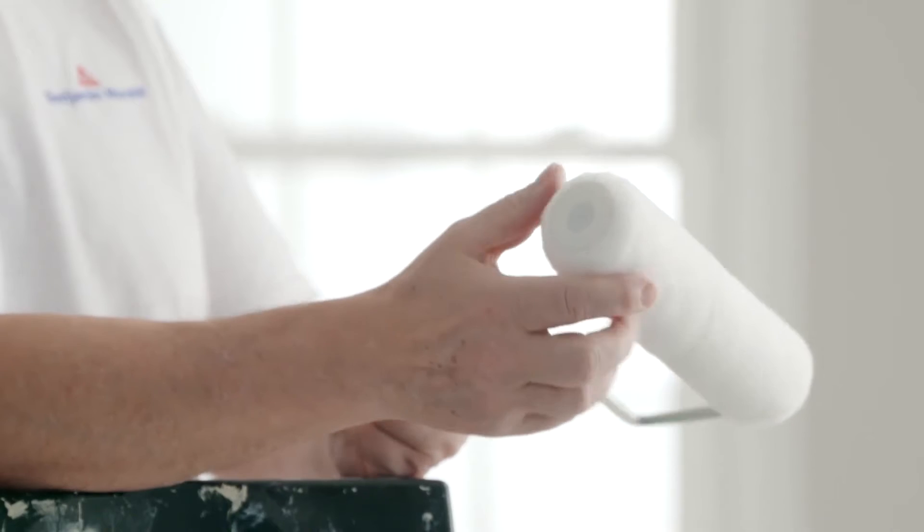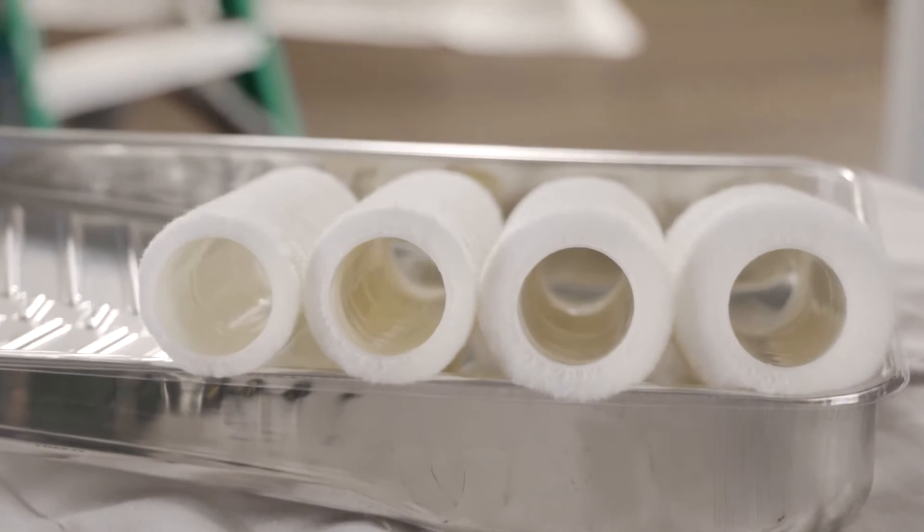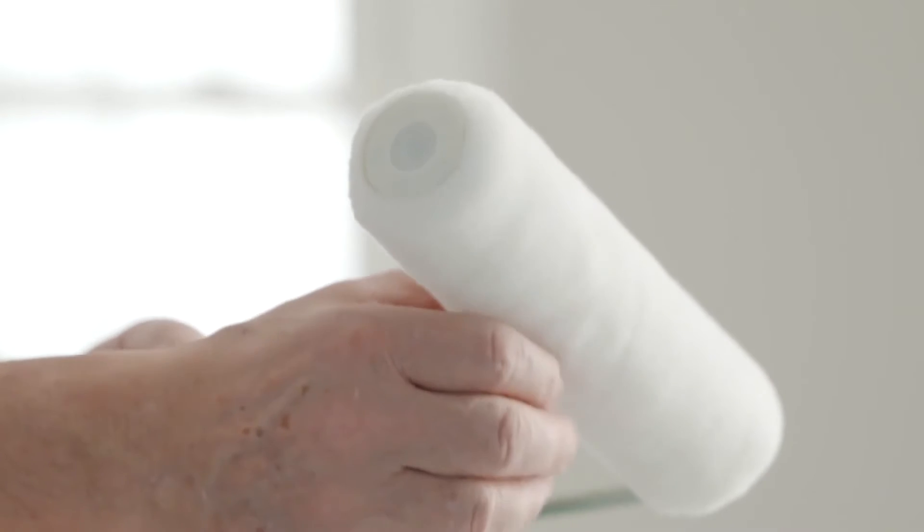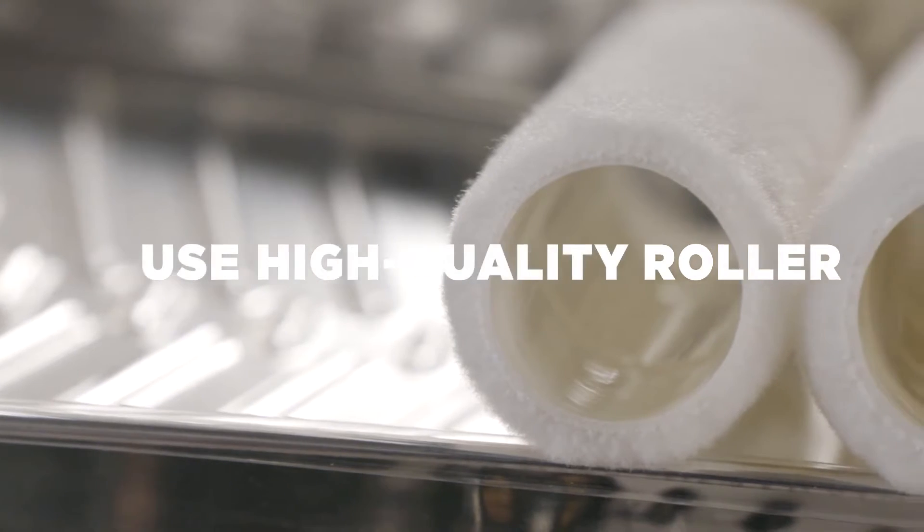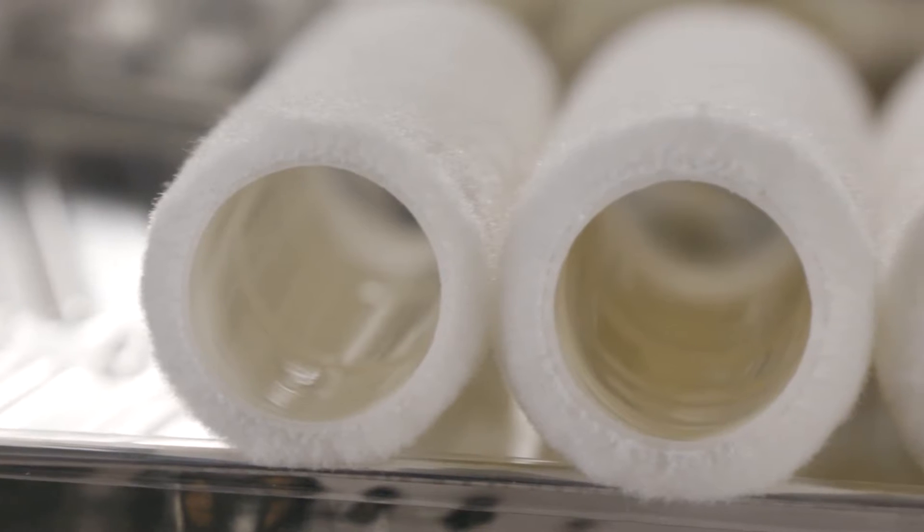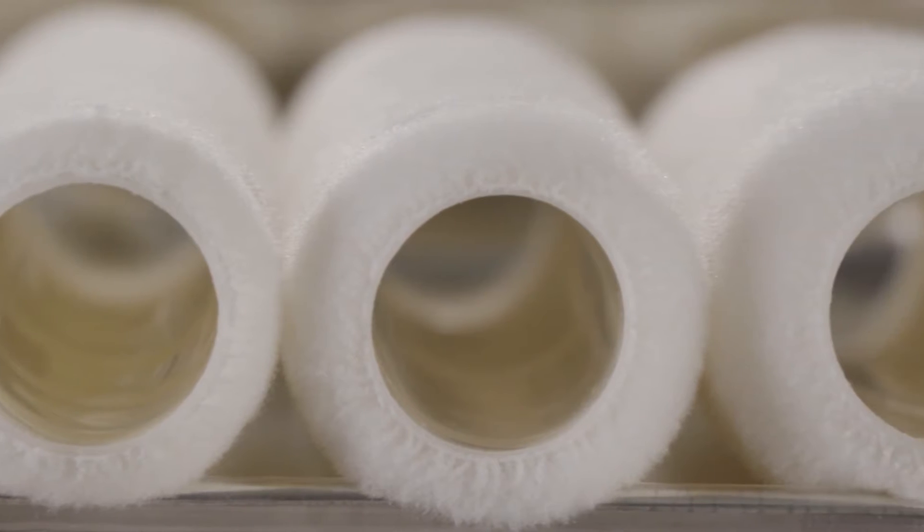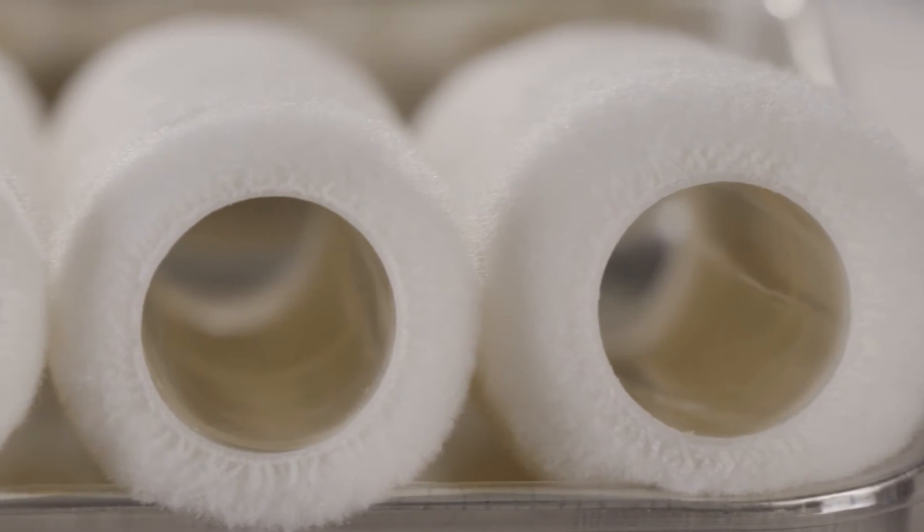Your roller selection is critical. Using a low-quality roller can produce a poor finish even with a high-quality paint. For normal wall application, you should use a high-quality 3/8-inch nap roller. If you're applying a glossy paint, you'll want to use a quarter-inch nap roller. Rougher textured walls will require a thicker half-inch to three-quarter-inch nap roller.